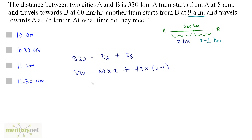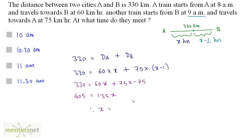So 330 equals 60x plus 75(x minus 1), giving 330 equals 60x plus 75x minus 75. Therefore, 330 plus 75 equals 405, and 60 plus 75 equals 135x. So x equals 405 divided by 135, which equals 3. This means the meeting point, taking reference from A starting at 8 am, is 3 hours after, so 8 am plus 3 hours gives 11 am as the correct answer.